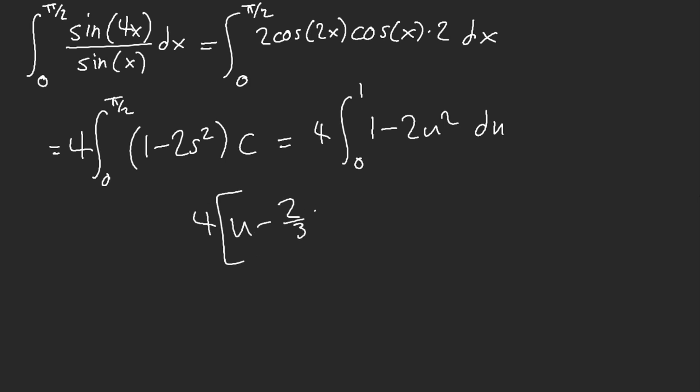So, 2 thirds, u cubed, 0 to 1. This is 4 times 1 third. Our answer is immediately 4 thirds.